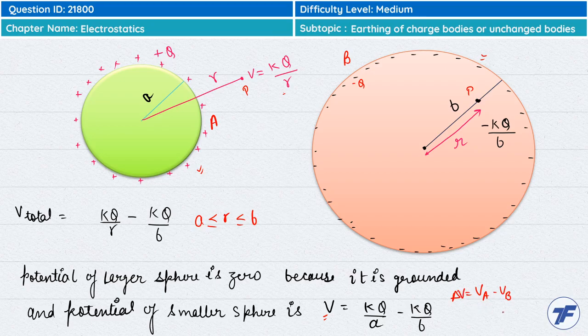Aur VB ki value 0 hai to delta V is equal to VA ho jayega aur humne VA abhi calculate kar liye hai.